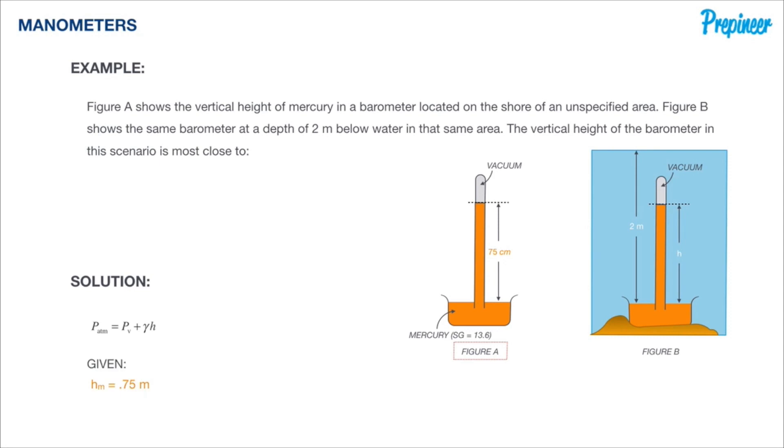So we're given a height of the mercury column at 0.75 meters. We're given that we don't know the atmospheric pressure, but we do know that the vapor pressure is a vacuum, so it's zero kPa. We also know that the specific weight of mercury is 133,416.